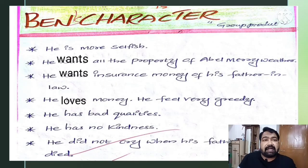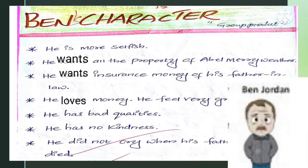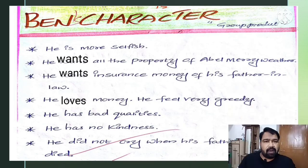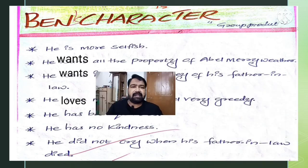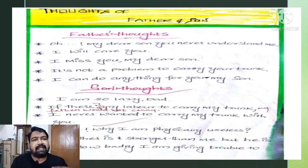Now let us see how to describe a character. Here the children described Ben's character from 'The Dear Departed.' He is very selfish. He wants all the property of Abel Meriwether. He wants the insurance money of his father-in-law. He loves money and is very greedy. He has bad qualities, no kindness, and he did not cry when his father-in-law died.